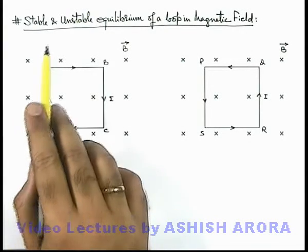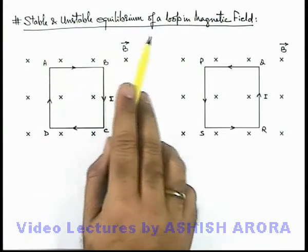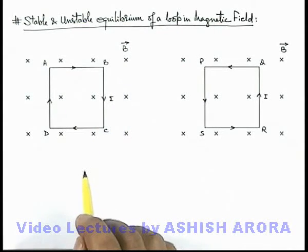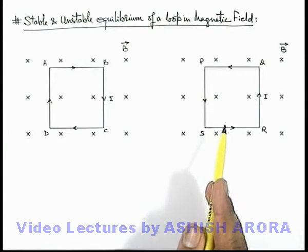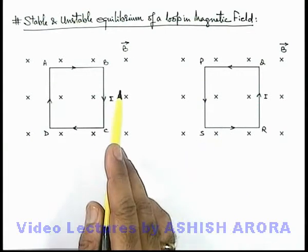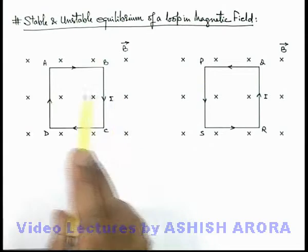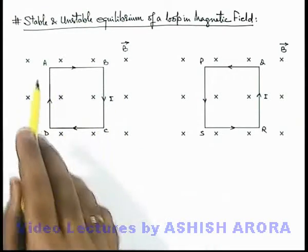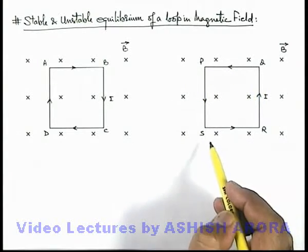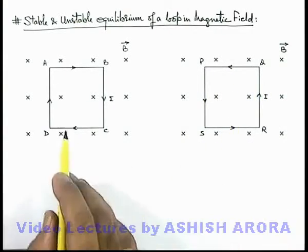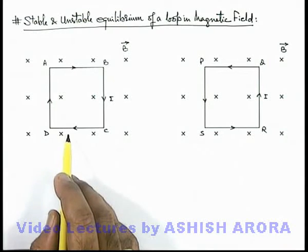Now let us study stable and unstable equilibrium of a current-carrying loop in a magnetic field. Here we can see two square or rectangular shaped coils placed in a uniform magnetic field B. In coil ABCD the current flows in a clockwise manner, and in the other coil PQRS the current I flows in an anti-clockwise manner.